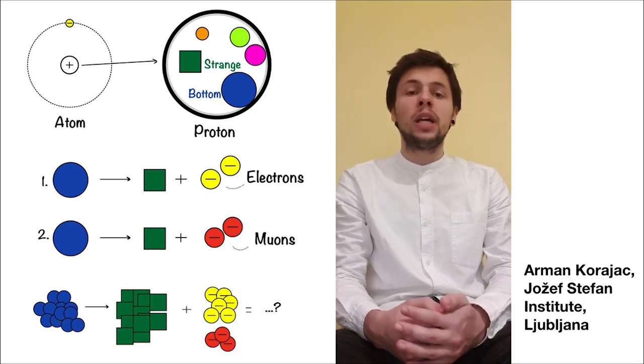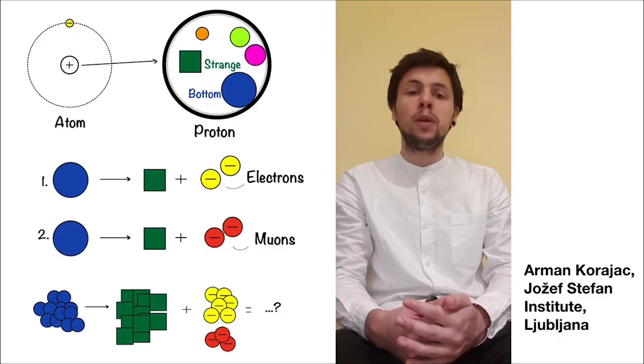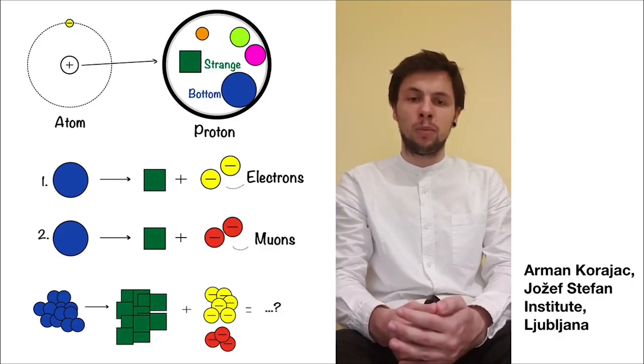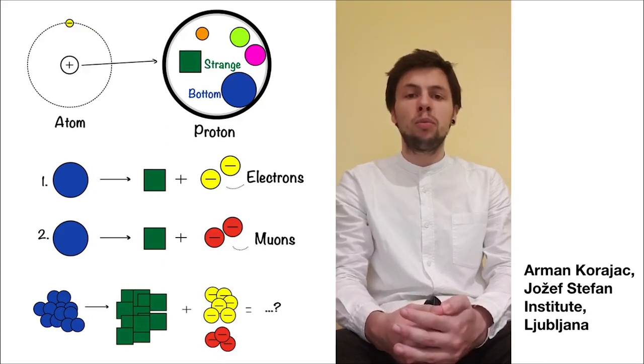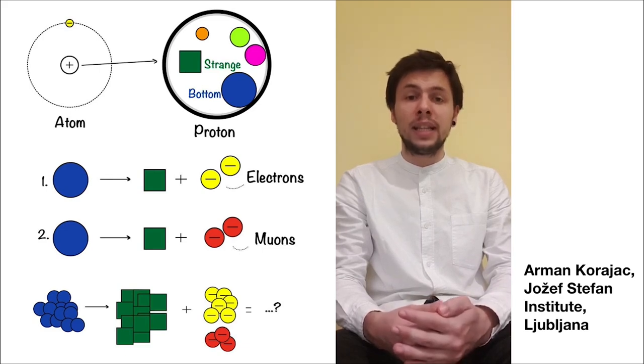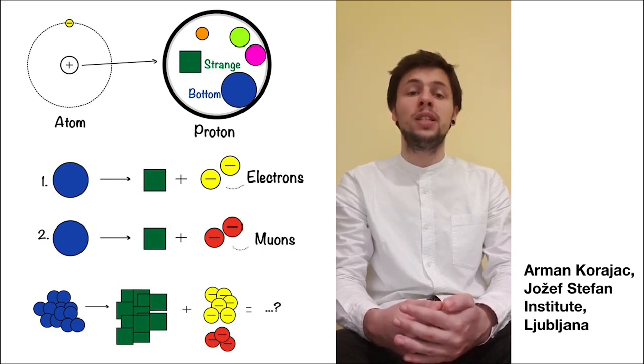Now, under certain circumstances, if we would repeat this experiment a couple of times and count the electrons and the muons, we would see that there are more electrons than muons, contrary to what the standard model predicts, namely that this number should be the same.